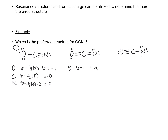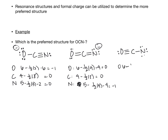For structure two: oxygen is six minus half of four minus four, which equals zero. Carbon is four minus half of eight, which equals zero. Nitrogen is five minus half of four minus four, which gives minus one — a negative on nitrogen. For structure three: oxygen is six minus half of six minus two, which is plus one. Carbon is four minus half of eight, which equals zero. Nitrogen is five minus half of two minus six, which equals negative two.